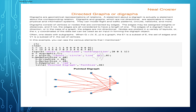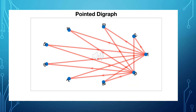Often we deal with subgraphs, which is a limited set of the total number of nodes in a digraph. Here you can see the various elements of the digraph that I mentioned: the nodes, numbered in this case, and the edges with the directional arrows.